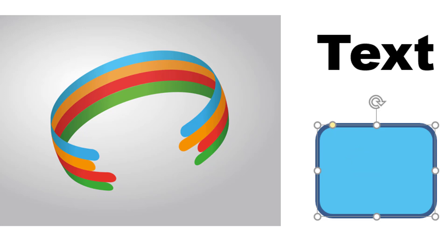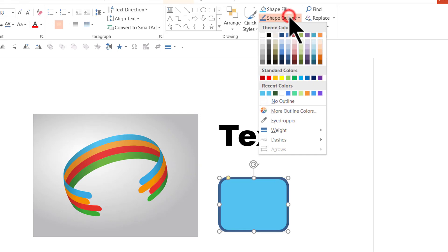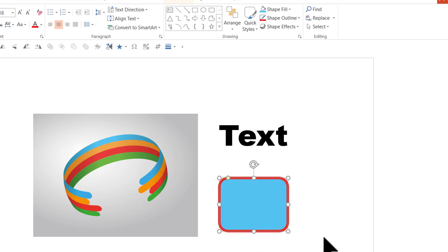Now let me do this demonstration once again, but this time I want to fill the outline color with this red color here. So I am going to select the shape, go to shape outline, go to eyedropper, move the cursor over the specific red color, and now I get the information about what the color is — it is red and the RGB values are R is 230, G is 52, and B is 42. Now I am going to click on it and instantly the outline color is changed to the specific red color that we have picked up.